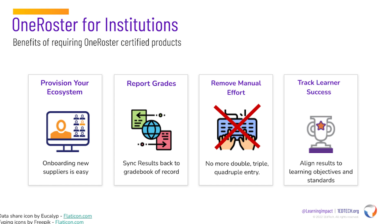OneRoster also provides mechanics for those applications to sync their grades or results back into the gradebook of record, wherever that might live. Since these systems get provisioned using the same mechanics and the same data, tracking of learner success across disparate apps becomes doable and easier.